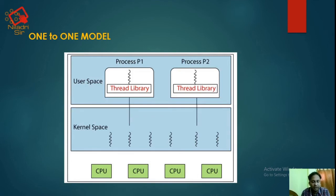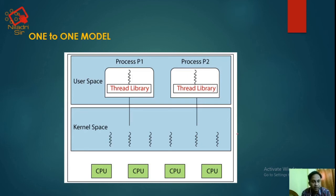In the pictorial representation of one-to-one model, there are multiple CPUs each with an individual kernel space. In the user space, each process has its own thread library, and individual processes have individual thread libraries.